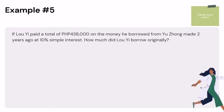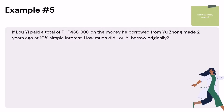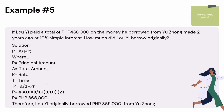Example 5: If Lu Yi paid a total of ₱438,000 on the money he borrowed from Yu Tsung 2 years ago at 10% simple interest, how much did Lu Yi borrow originally? Using P = A ÷ (1 + RT): 438,000 ÷ (1 + 0.10 × 2) = $365,000. Therefore, Lu Yi originally borrowed $365,000 from Yu Tsung.